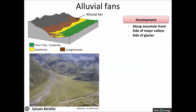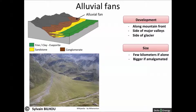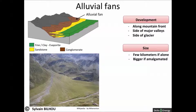Individual alluvial fans are commonly small. Most are only a few kilometers across, and the largest rarely reach more than tens of kilometers. As a consequence, reservoirs that are developed in alluvial fan sequences are commonly small, unless the fans are amalgamated.